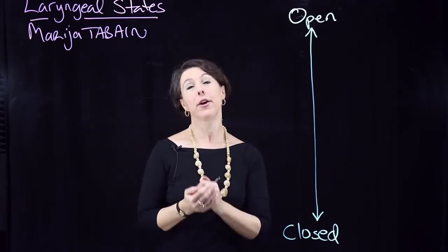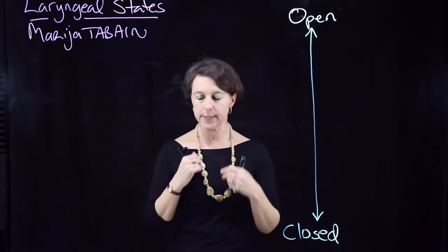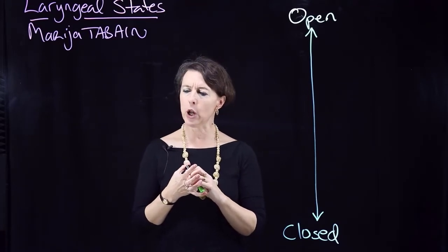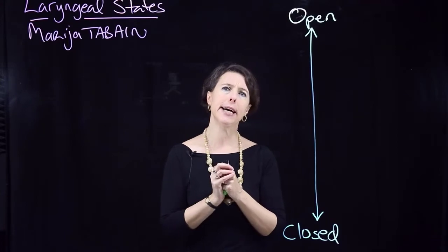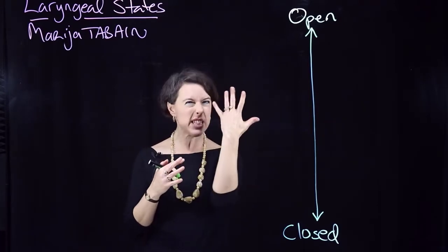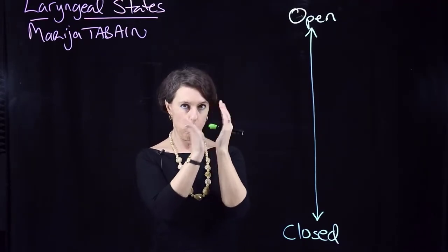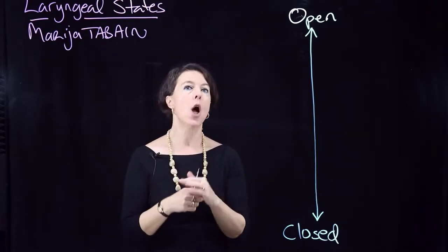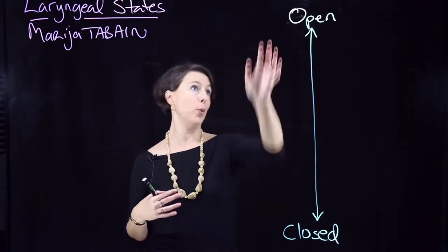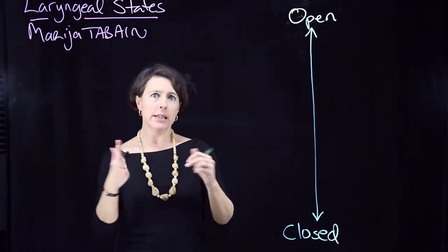So we're going to look at the different states of the larynx and how that influences what happens above it — the different consonant and vowel sounds. The air is coming up from the lungs, and the larynx is quite a complex structure with lots of ligaments and cartilages. In linguistics we really just worry about a small number of states — whether the vocal folds are open or closed.